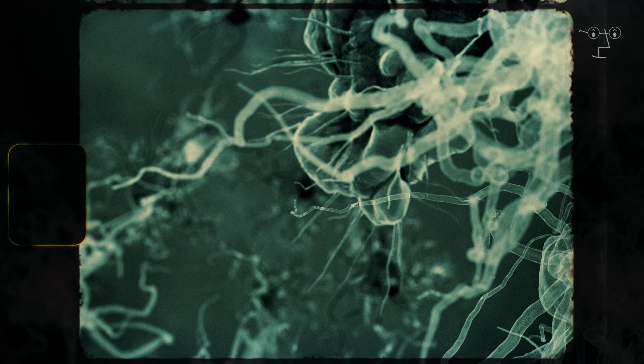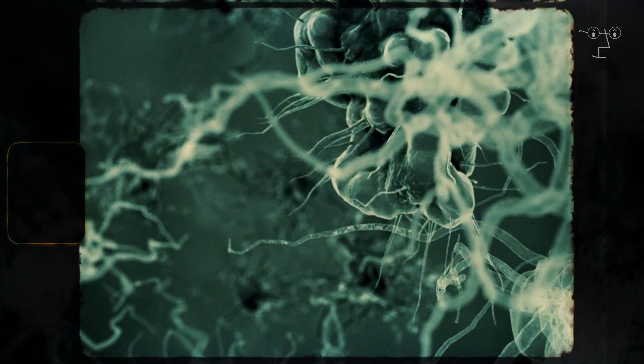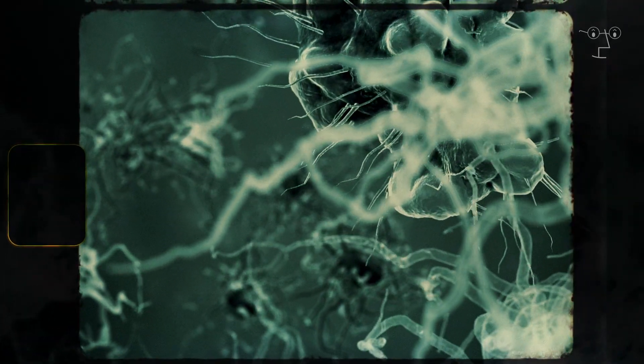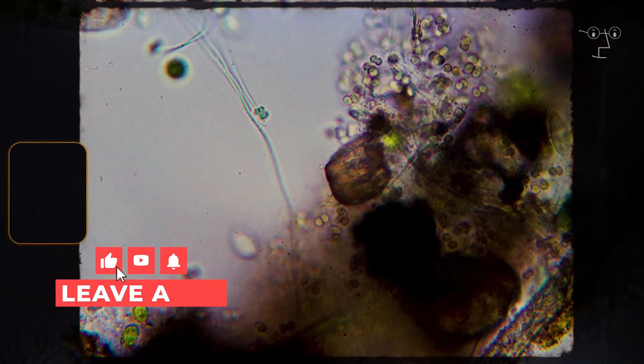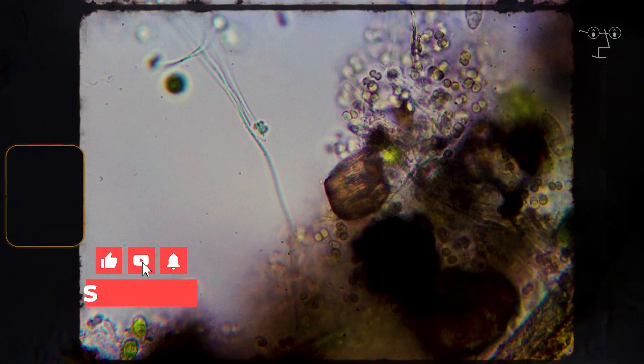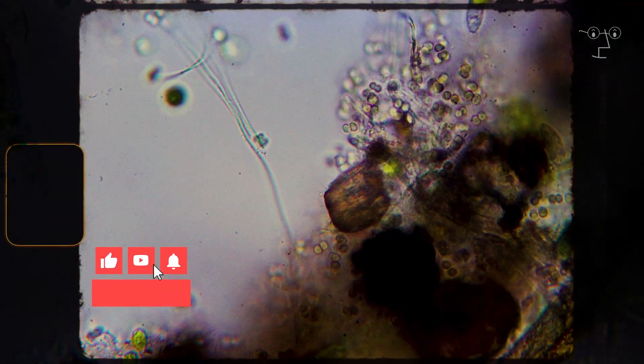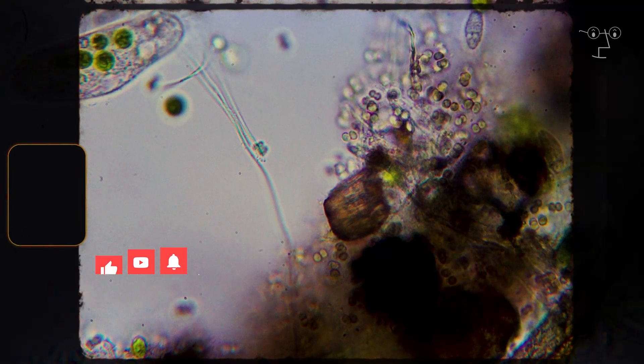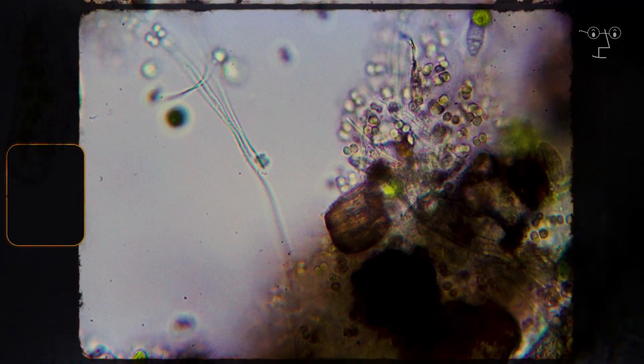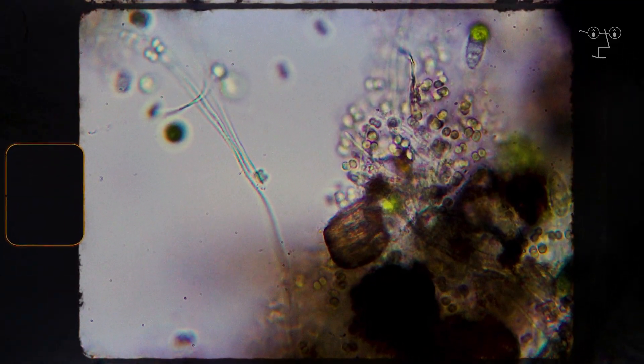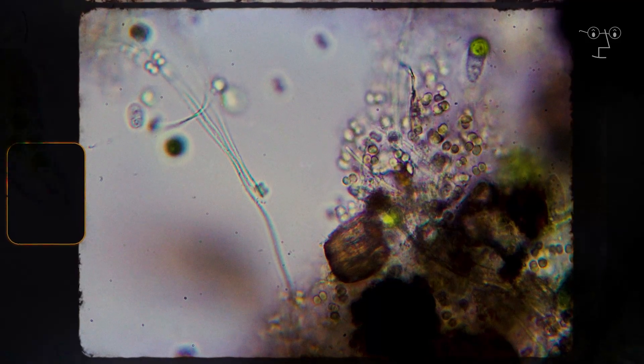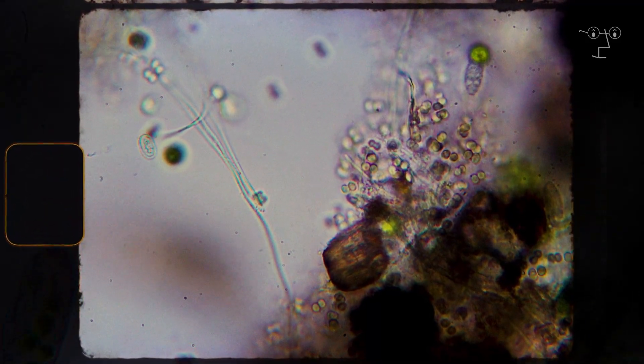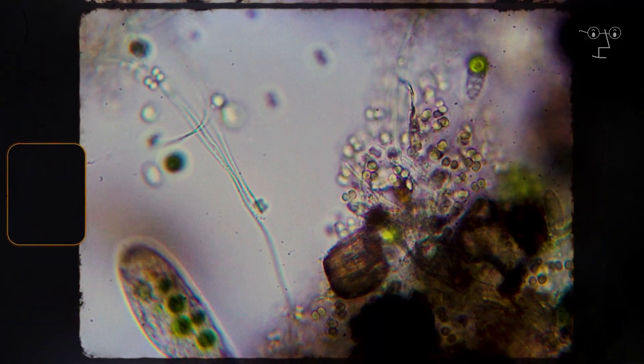These organisms, known as extremophiles, possess unique adaptations that allow not just their survival, but also the ability to perform biological functions in conditions that would be lethal for most living beings. For example, many of these microorganisms use specialized biochemical strategies to cope with high pressure and lack of light, such as enzymes and robust cellular structures that are not denatured by extreme pressure.